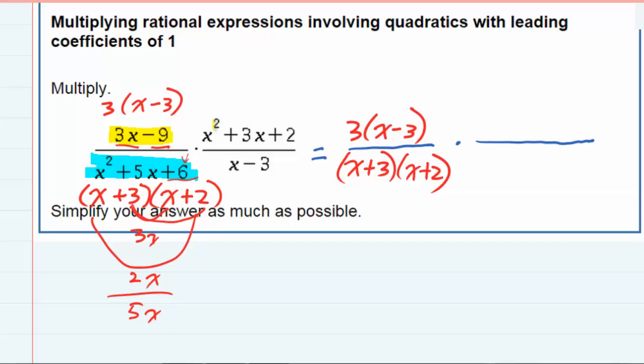Moving over to the other fraction, I again have a trinomial. The leading coefficient is still 1 for x squared. So it has to be x and x if it's going to factor. And I need two numbers that multiply to give me 2 but add up to 3.